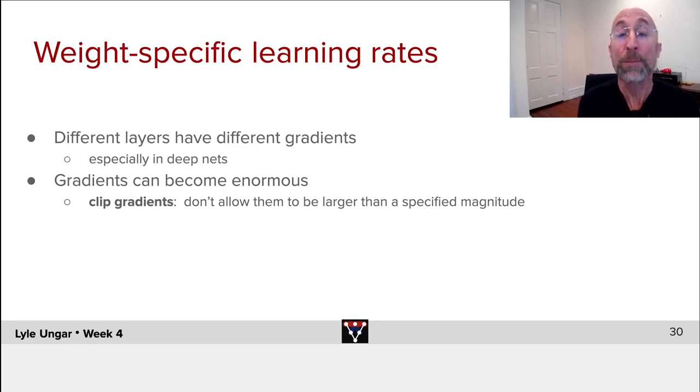The other thing that happens is that periodically the weights become enormously large, or the gradients become enormously large or small. And many people put in what they call gradient clipping. If the gradient is bigger than a million, truncate it to be a million.